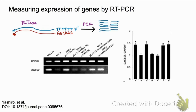In reverse transcriptase PCR, after the PCR process, the DNA that has been amplified is separated by gel electrophoresis — that's what's shown in the image on the left. You can see that the genes GAPDH and CXCL12 have been reverse transcribed and then amplified by PCR, and these were separated by gel electrophoresis from different samples.